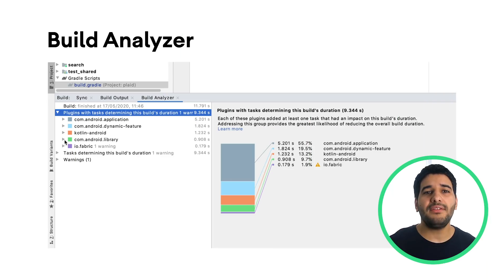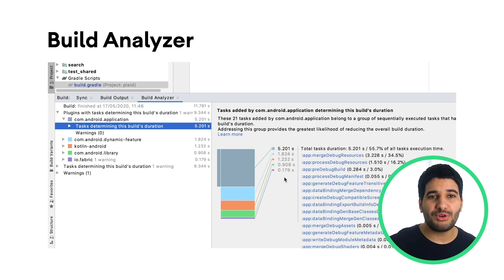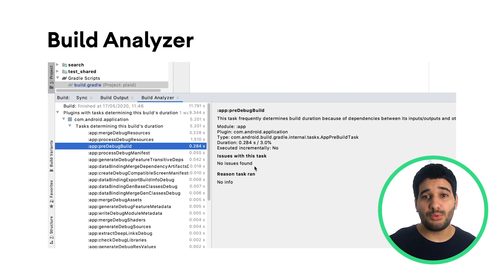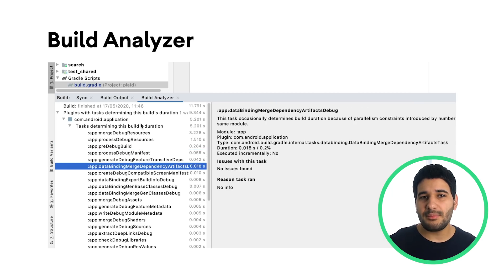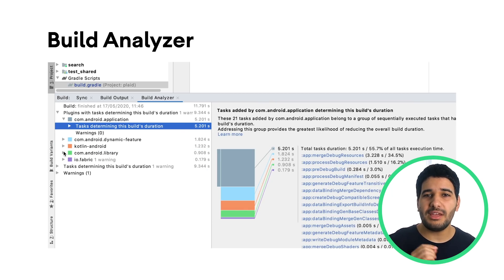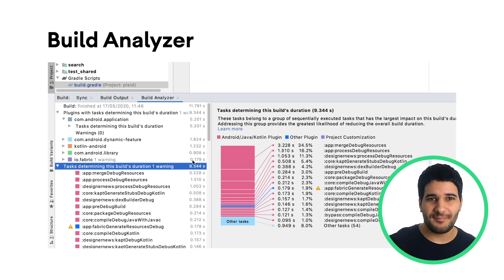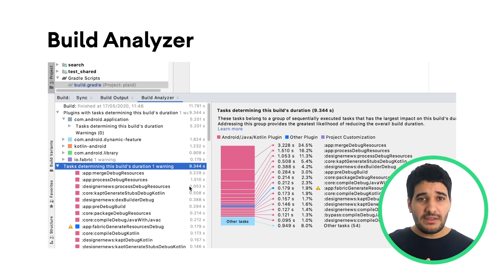If you haven't already done so, install version 4.0 of the Gradle plugin to make this work, and build your app by selecting Build > Make Project from the menu bar.